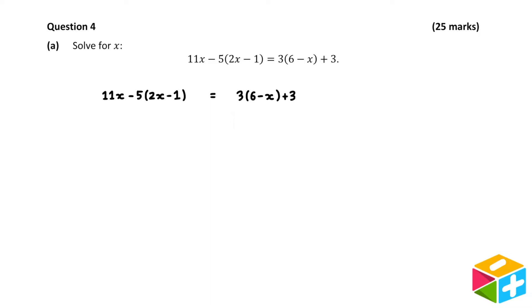A good first step here is to multiply out the brackets on both sides. Let's start with the one on the left. Minus 5 times 2x is minus 10x, and minus 5 times minus 1 is plus 5. Now for the brackets on the right, 3 times 6 is 18, and 3 times minus x is minus 3x. From here, we can do some simplification by combining x terms and combining number terms. 11x minus 10x is 1x, and 18 plus 3 is 21.